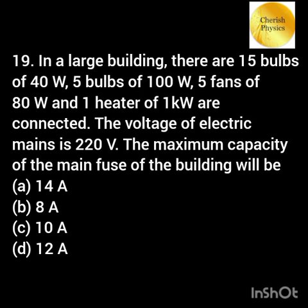In a building there are 15 bulbs of 40 watt, 5 bulbs of 100 watt, 5 fans of 80 watt and 1 heater of 1 kilowatt connected. The voltage of the electric mains is 220 volt. The maximum capacity of the main fuse of the building will be?